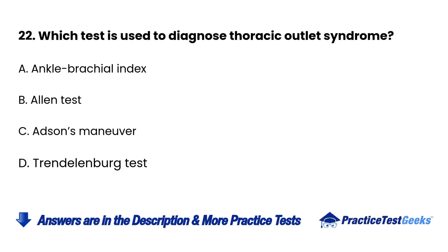Question 22. Which test is used to diagnose thoracic outlet syndrome? A. Ankle brachial index. B. Allen test. C. Adson's maneuver.